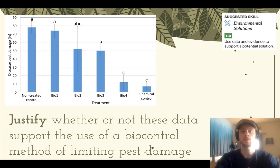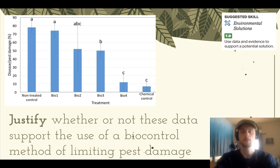The suggested science skill for practice FRQ 5.14 today is to use data or evidence to support a potential solution. Take a look at this graph and use the data in the graph to justify whether or not these data support the use of biocontrol as a method of limiting pest damage.